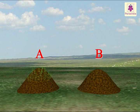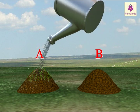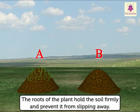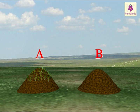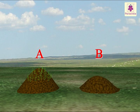After a week, we see plants growing on mound A. And after watering, the mound remains as it is. The roots of the plant hold the soil firmly and prevent it from slipping away. On the other hand, when we water mound B, soil keeps slipping away.